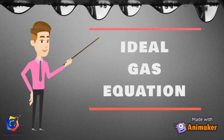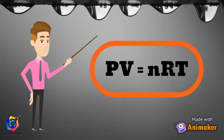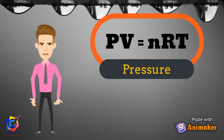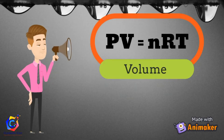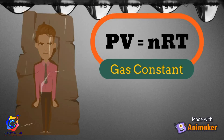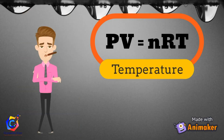In the Ideal Gas Equation, PV equals nRT. P stands for gas pressure, V stands for volume occupied by the gas, n is the moles of gas, R is the ideal gas constant, and T is the absolute temperature of the gas.